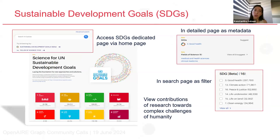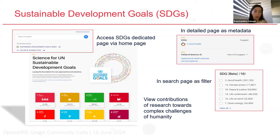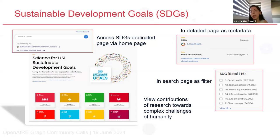We also support the sustainable development goals classification, which is about contributions of research towards complex challenges of humanity such as poverty and hunger, supported by the United Nations. From the home page there is a link to browse the SDGs page, where you can see all available SDGs and the number of research products for each. There is also a filtering option for SDGs integrated as metadata in the detail pages.